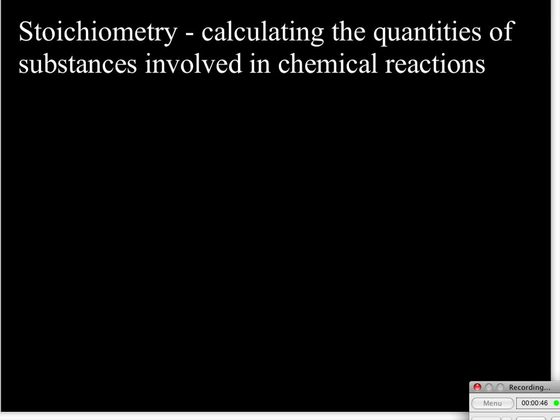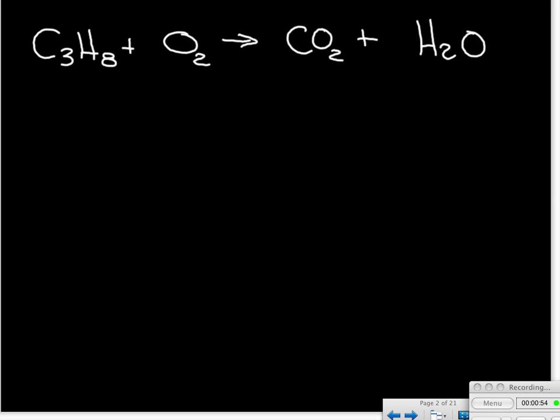Well, in chemistry, our recipe that we use is our balanced equation. So here's an example of a recipe in chemistry. This one isn't balanced yet, but we have a recipe here that says if you take C3H8, which is propane, and you react it with some oxygen, you'll produce carbon dioxide gas and water vapor. And once it's balanced, we can put our coefficients in there, and I'm assuming you already know how to balance equations.